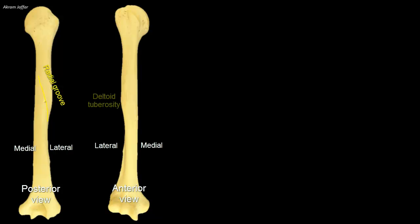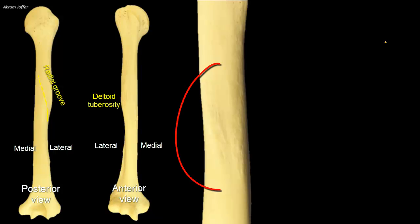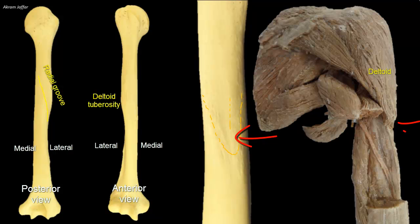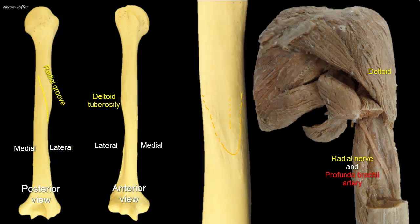The shaft has two prominent features: posteriorly the radial groove and laterally the deltoid tuberosity. The deltoid tuberosity is at the middle of the lateral side of the shaft. It is V-shaped with a smaller ridge in between and provides attachment for the deltoid muscle. The radial groove spirals down the posterior surface, hence it's also called the spiral groove. It is named radial because the radial nerve and profunda brachii vessels lie in the groove during their passage between the medial and lateral heads of triceps brachii muscle.